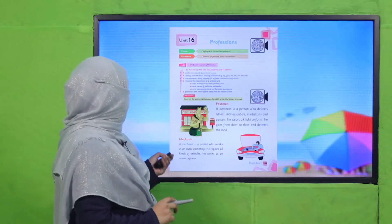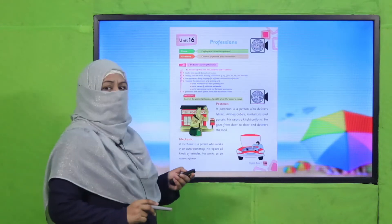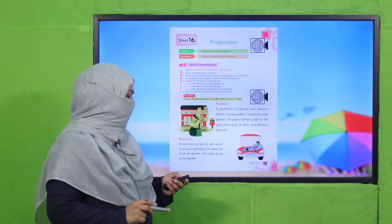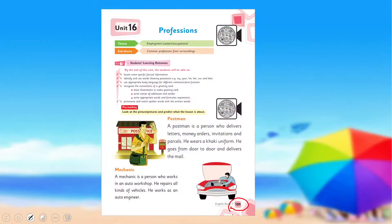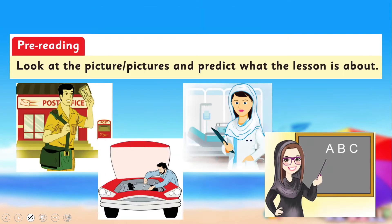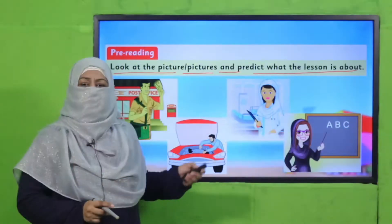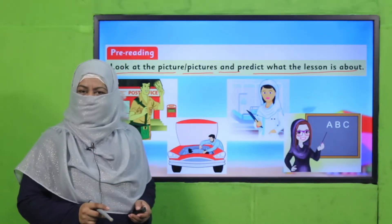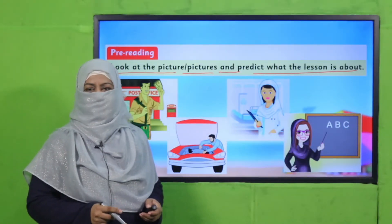Now all of you open your book to page number 109. Look at the picture or pictures and predict what the lesson is about. Why do you guess? What is this lesson about? Pause the video, answer this question to your teacher, and then come back.